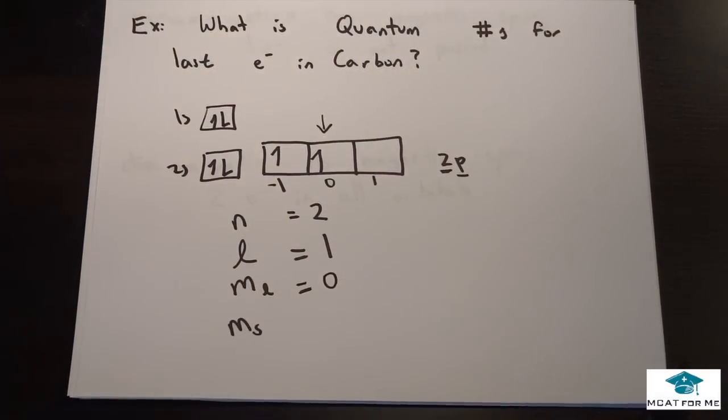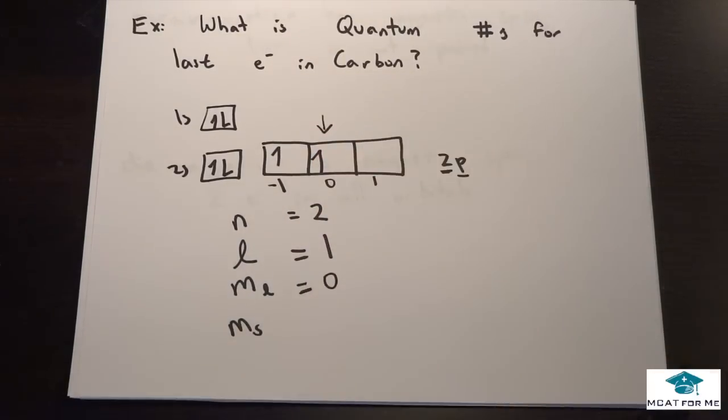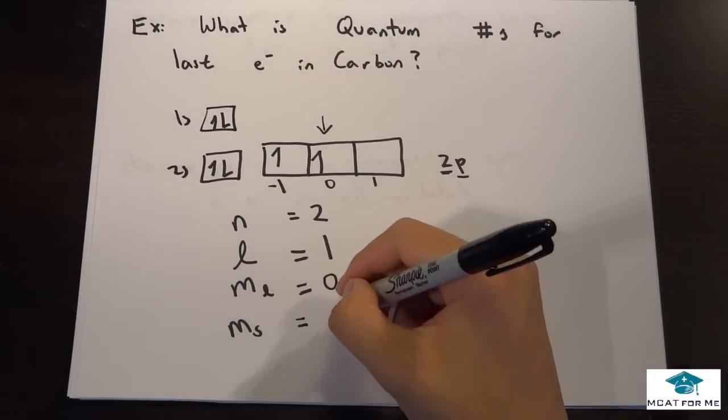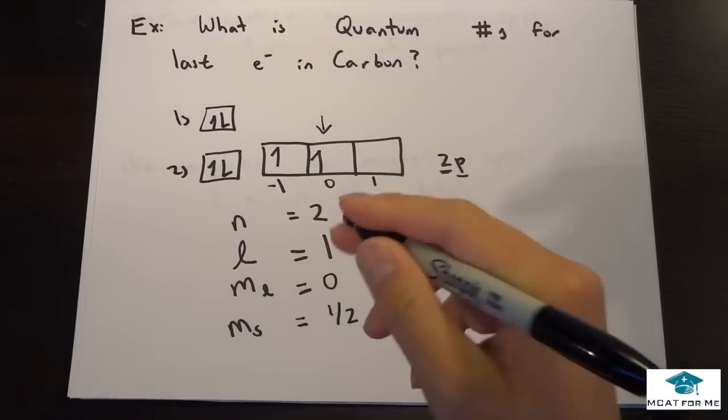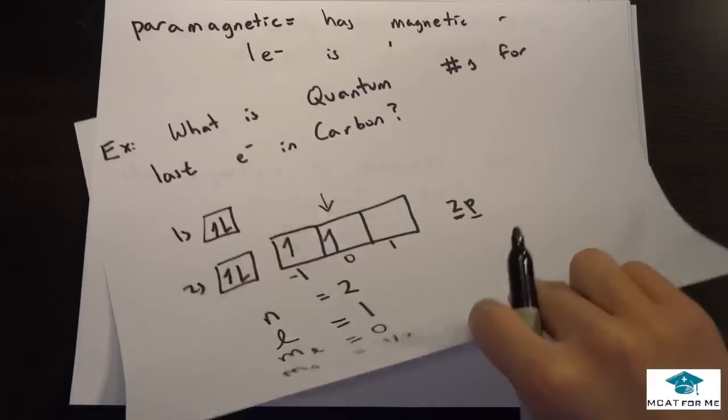So the MCAT will never make you distinguish this first one as negative 1 or positive 1, so just to get that clear. And the last one, same thing, they can't say if it's plus 1 half or minus 1 half. You just know that it's one of the two. Okay, so that's all we're going to do for that one.